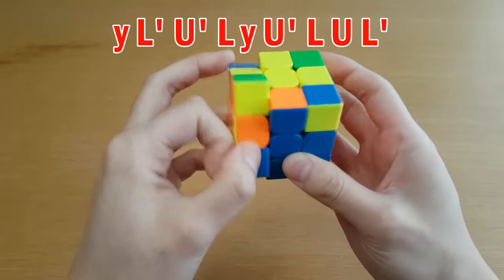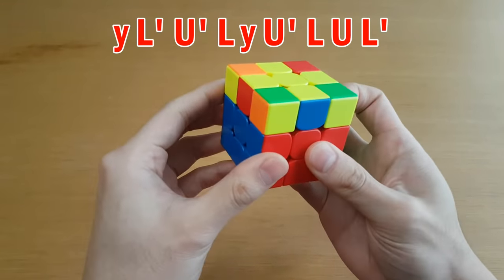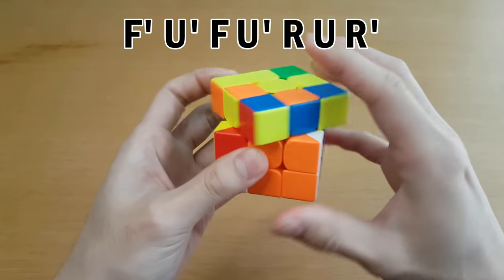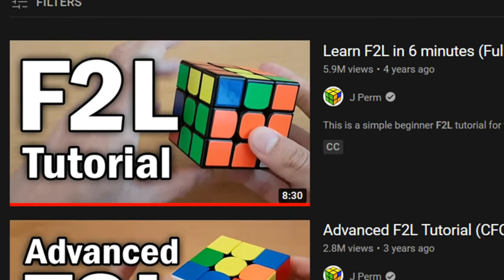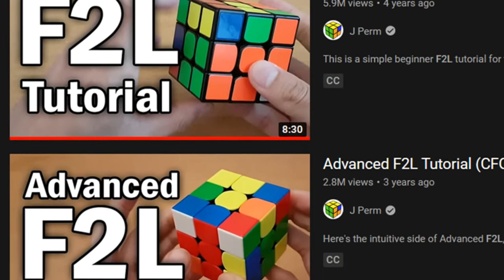Anytime you get a solve where you notice you did two cube rotations to solve a case, stop, go look at the sheet, and learn to solve it properly. Also, make sure you've learned F2L and then advanced F2L, otherwise you shouldn't really be worrying about this yet.